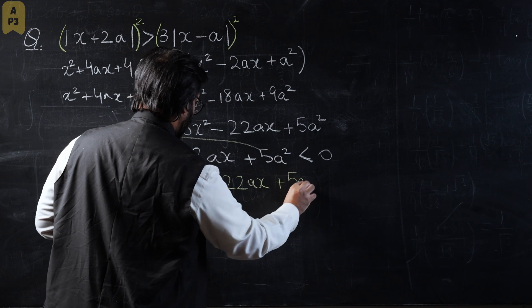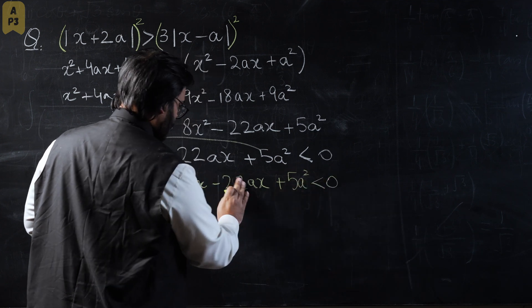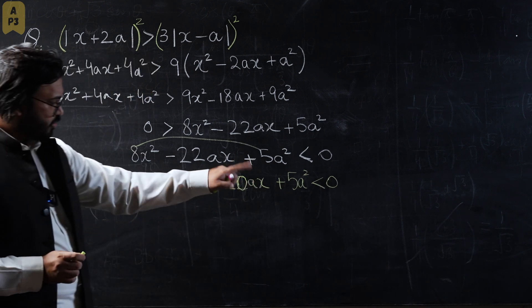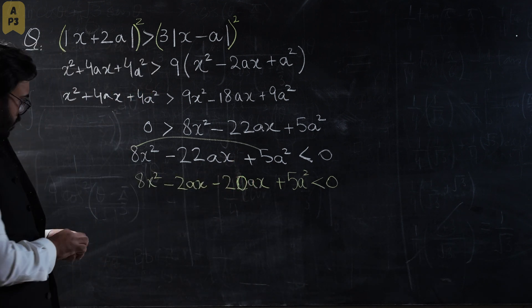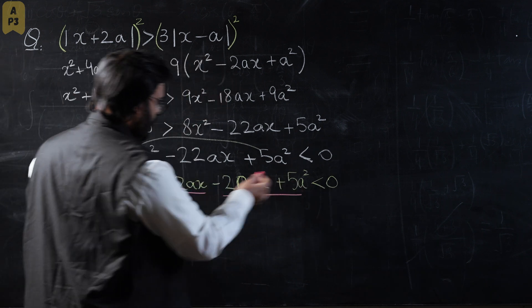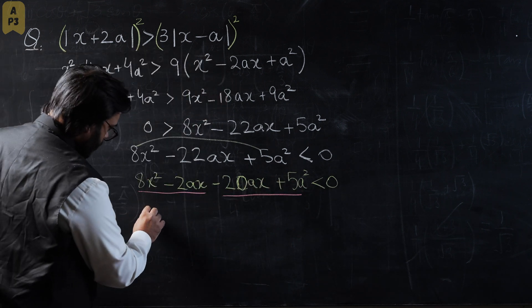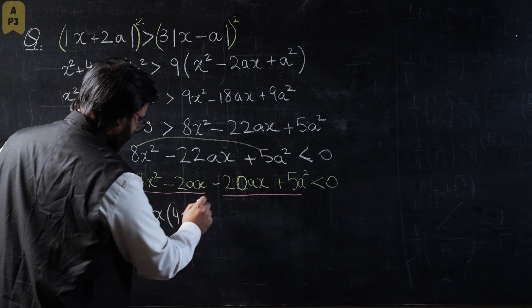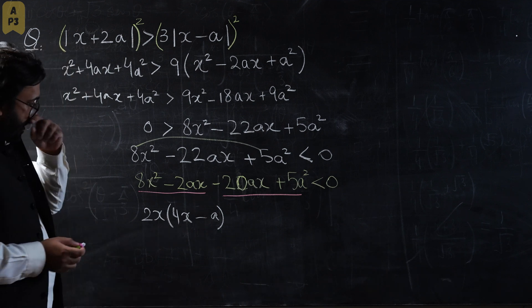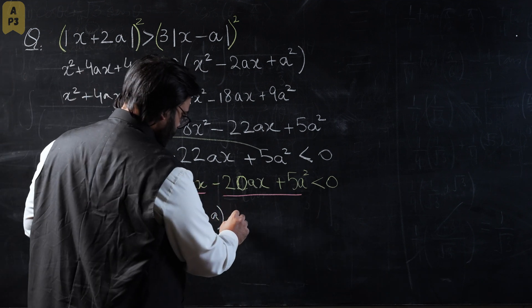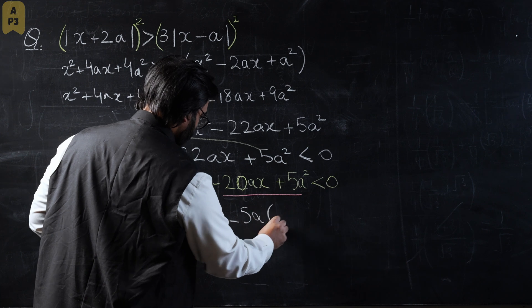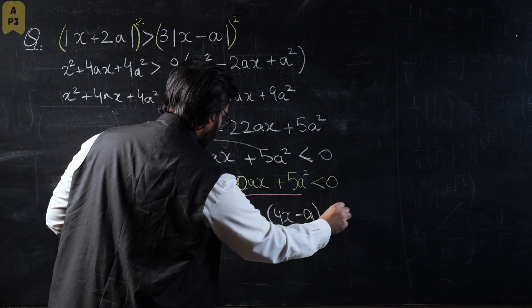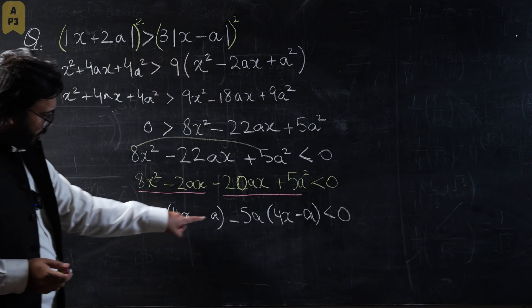It would be 8x squared minus 2ax minus 20ax plus 5a squared. I think I made a mistake—I'll fix it right away. This is going to be 20, not 22. Let's take common in groups: 2x common gives 4x minus a, and let's take minus 5a common. You will have 4x minus a taken as common. This must be less than zero.